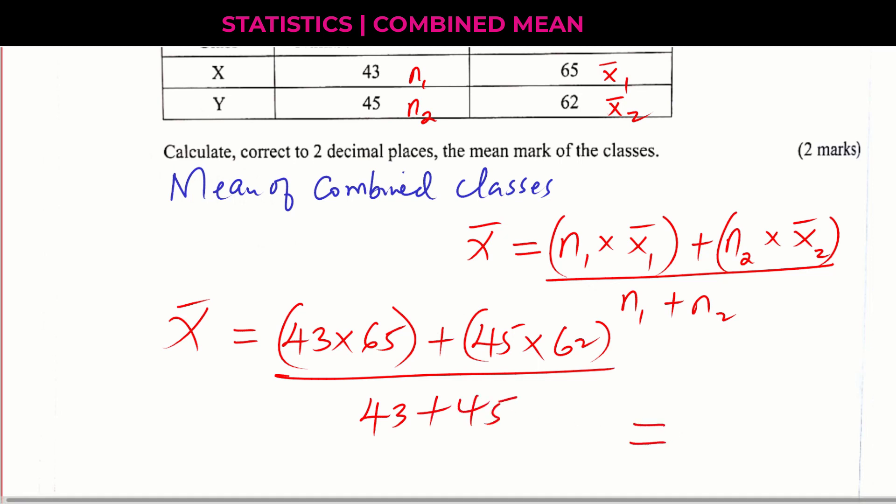So use the calculator to do this. 43 times 65 plus 45 times 62, divided by 43 plus 45, this will give 63.47. That is the mean mark of the classes.